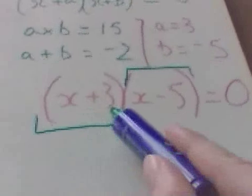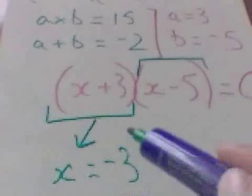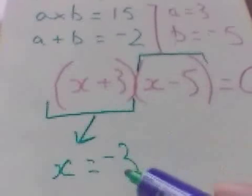Well, for this bracket to be equal to nothing, x must equal negative 3. Negative 3 add 3 is 0.